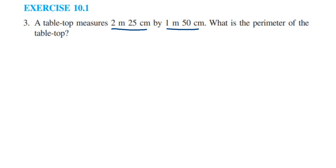So we are given the length and breadth of the tabletop. The shape is a rectangle — a table top is usually in the shape of a rectangle. We have to find out the perimeter of this rectangle.